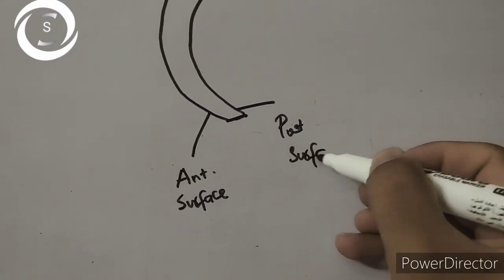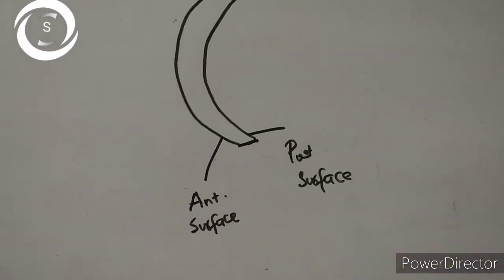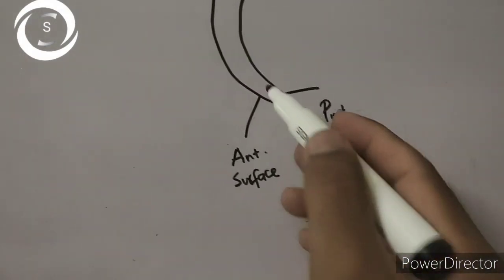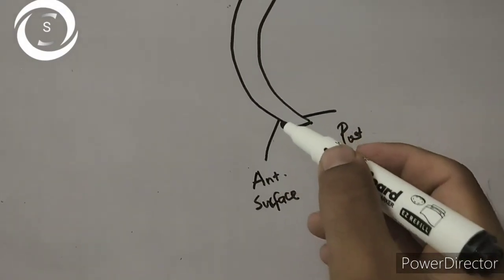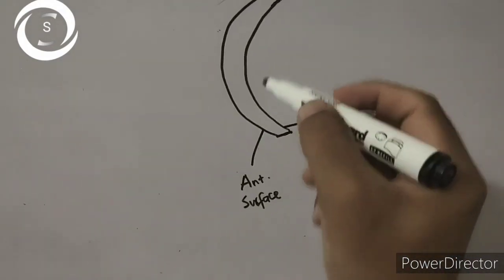What is corneal topography? In simple words, it is the study of the shape of the anterior surface of the cornea, or it is an imaging technique for mapping the anterior surface of the cornea.